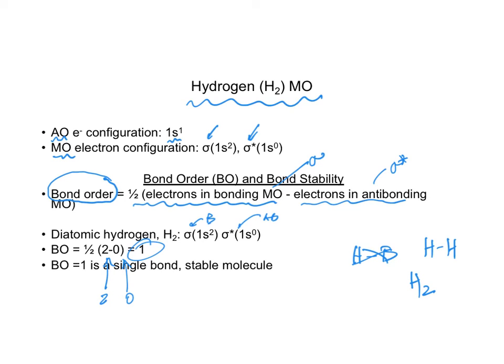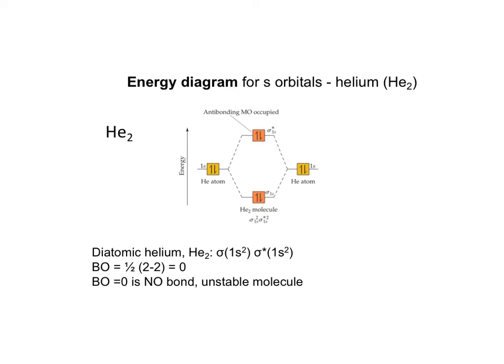If I move on to the next element on the periodic table, helium, I've done the same thing with the picture. I've taken the helium atom with its 1s². I've taken another helium atom, 1s². Both of these are atomic orbitals. What sits in the center is the molecular orbital. Notice I put the sigma 1s below the sigma star 1s. I have a grand total of four electrons. My antibonding, my bonding.